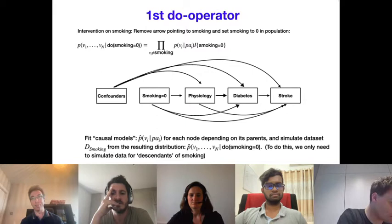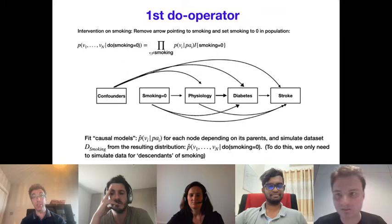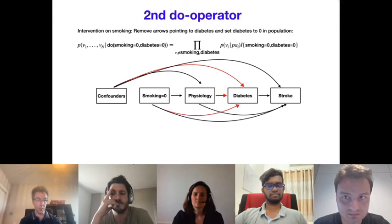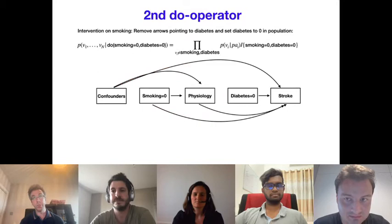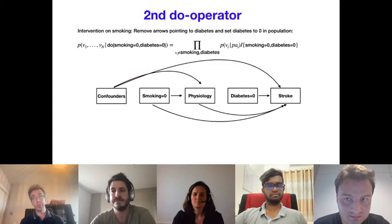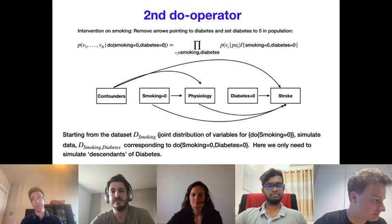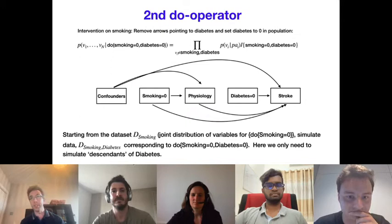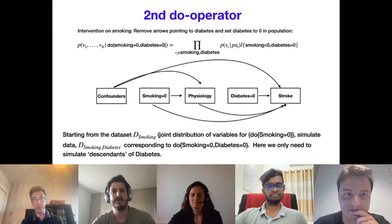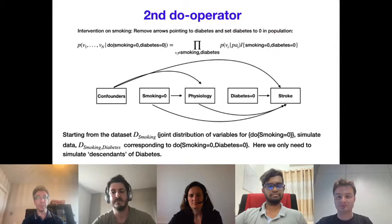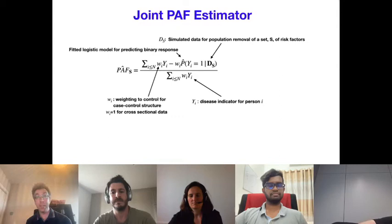The estimator for the joint PAF compares the average disease burden in the population to the predicted disease burden in the simulated dataset. It is a randomized estimator — repeating the process yields different estimates — so we average over several random datasets. Bootstrap inference is implemented using the R library boot.